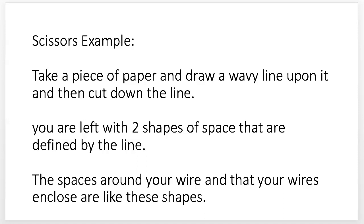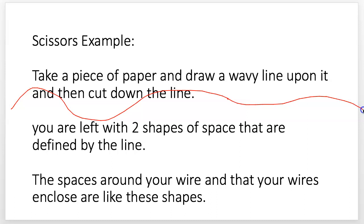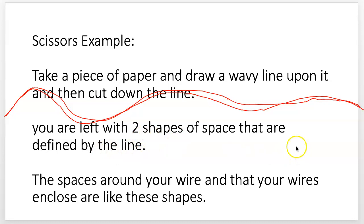Think of it this way: take a piece of paper and draw a line down the middle of it, however you want. Then take scissors and cut down that line. The thickness of the scissors will take away part of it, and you'll be left with two shapes — two planes, because a piece of paper is a plane in space. Those two shapes are defined by this line. The spaces around your wires and the wires that enclose will be like these two shapes — giving the idea of a volume, where the lines define the edges.